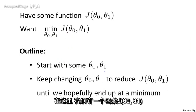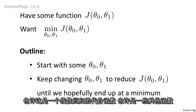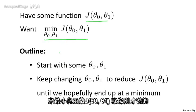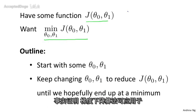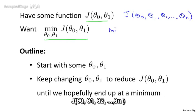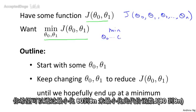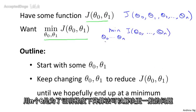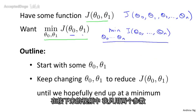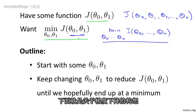Here's the problem setup. We're going to assume that we have some function J of θ₀ and θ₁ — maybe it's a cost function from linear regression, maybe it's some other function we want to minimize — and we want an algorithm for minimizing J of θ₀, θ₁. Gradient descent actually applies to more general functions, such as J of θ₀, θ₁, ..., θ_n, and you'd minimize over all those parameters. But for succinctness of notation, I'm just going to pretend I have only two parameters throughout the rest of this video.